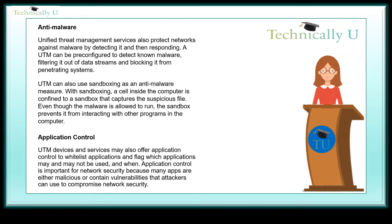Unified Threat Management services also protect networks against malware by detecting it and then responding. A UTM can be pre-configured to detect known malware, filtering it out of data streams and blocking it from penetrating systems. UTM can also use sandboxing as an anti-malware measure. With sandboxing, a cell inside the computer is confined to a sandbox that captures the suspicious file. Even though the malware is allowed to run, the sandbox prevents it from interacting with other programs in the computer.